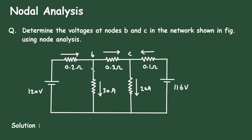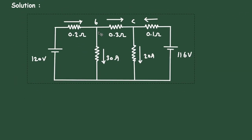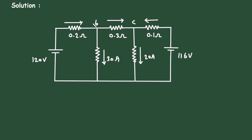Here in this circuit, we have to find this node voltage and this node voltage by using Nodal Analysis. First, let's say this is a node with voltage VB and this is node C with voltage VC. The direction of current is already given, and let's say this is the reference node with zero voltage.